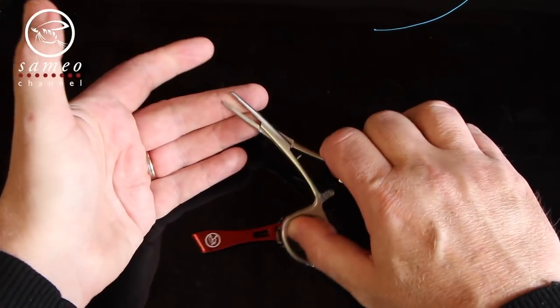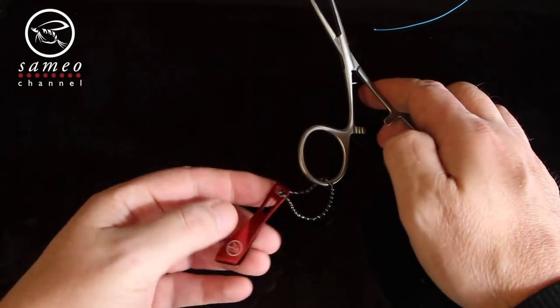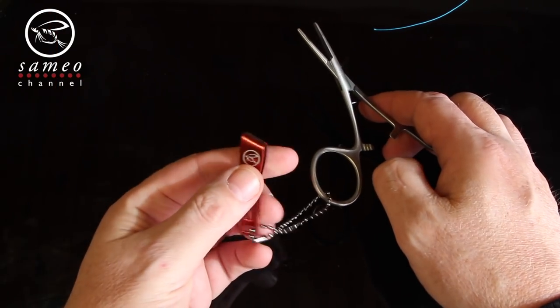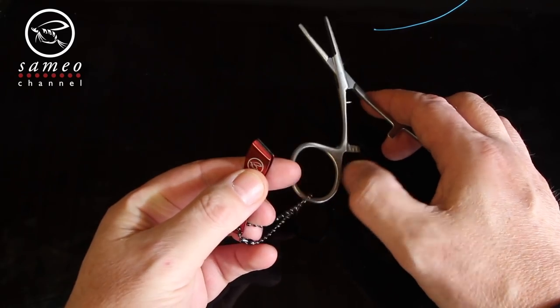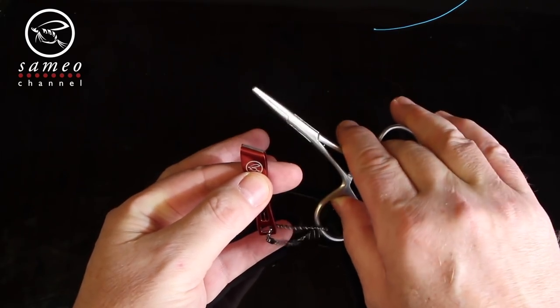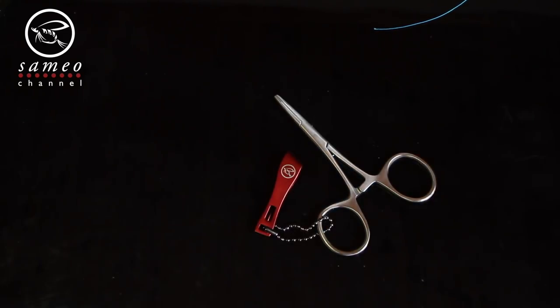First I will use my trusty old forceps for the knots. It's a tool I always keep at hand. I put my nipper together with it so it's close by. The forceps makes all the knots easier and quicker to perform.